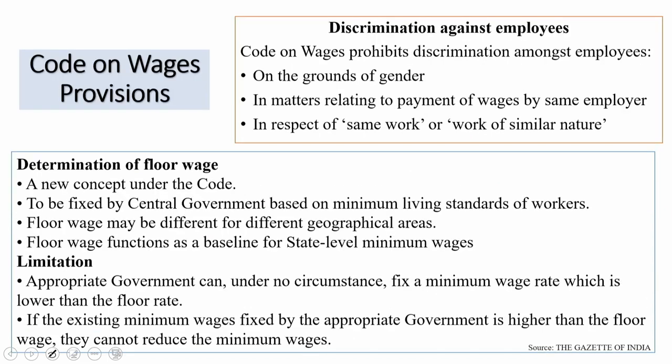Now let us look into the Code on Wages provisions regarding discrimination. The Code on Wages prohibits discrimination amongst employees on grounds of gender in matters relating to payment of wages by the same employer in respect of the same work or work of similar nature. These provisions apply only when related to gender and only when the work is the same or of similar nature.